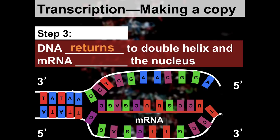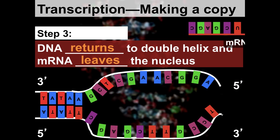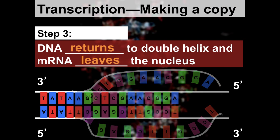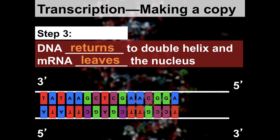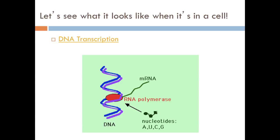Step three is that the DNA returns to its double helix — its twisted ladder form — and then the messenger RNA actually leaves the nucleus. Our RNA is able to leave the nucleus where DNA can't, which is exactly why we do transcription and need to make a copy.